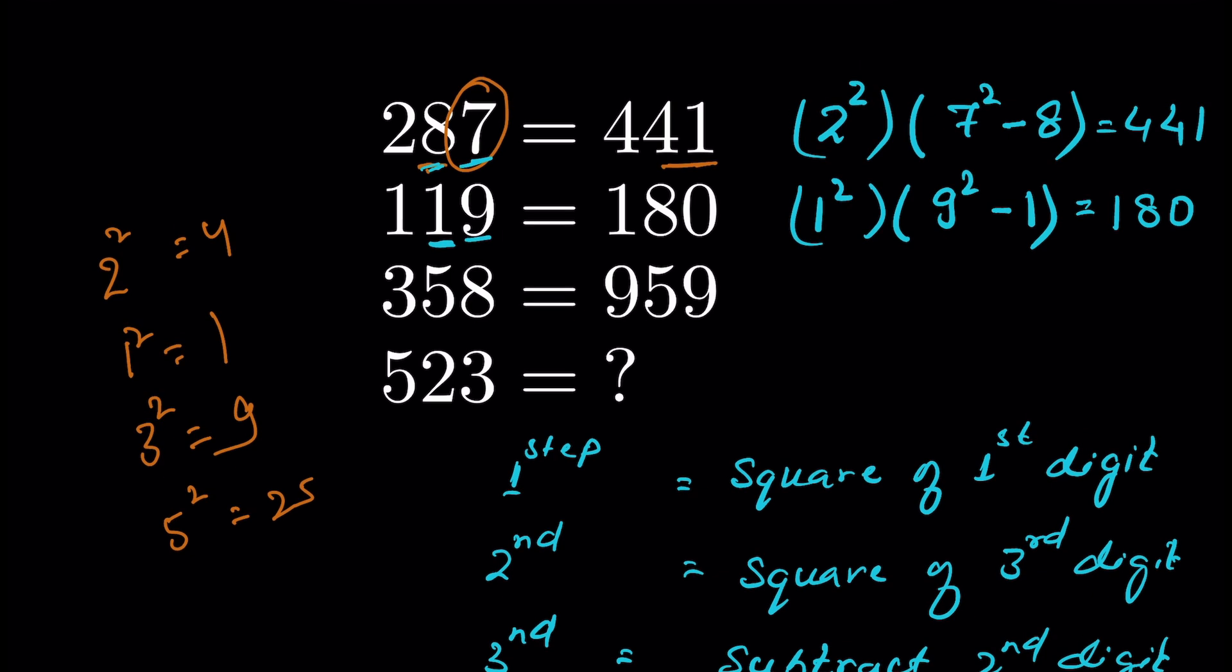First, we have to get the square of first digit, then the square of third digit, and then subtract the second digit out of it. Let's see for the third number, 358.